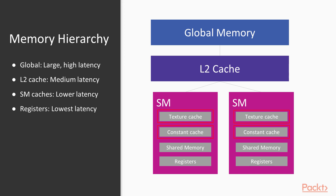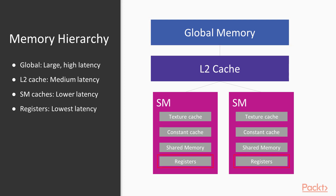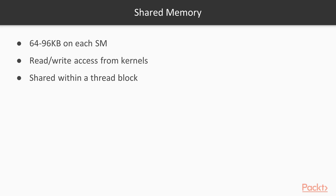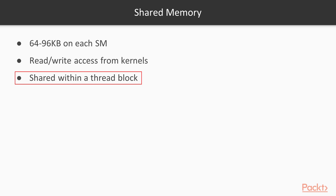Each SM typically has around 64 to 96 kilobytes of shared memory, which can be split up between the blocks running on that SM. It's much faster to access than global memory, but not quite as fast as registers. Unlike the texture and constant caches, shared memory can be written directly from your kernel code. Every thread within a block can access the same section of shared memory, so it can be used to send data between threads. Like everything in CUDA, it has some rules that need to be followed for best performance — we'll talk about those later. For now, let's see how we can use this to improve our transpose kernel.